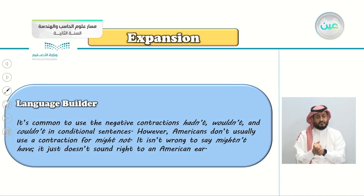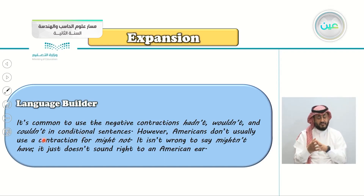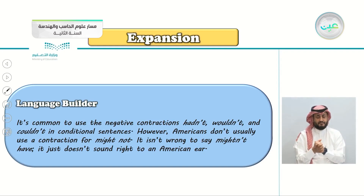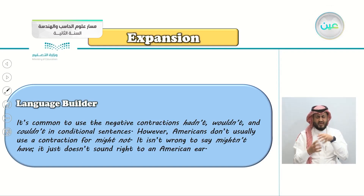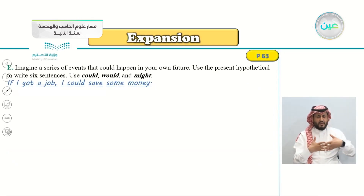A language builder note: it is common to use negative contractions — hadn't, wouldn't, couldn't — in conditional sentences. However, Americans don't usually use contractions for 'might not.' Saying 'mightn't have' is not wrong, but it just doesn't sound right to an American ear.